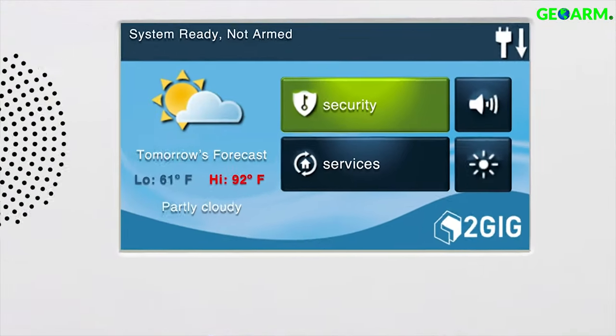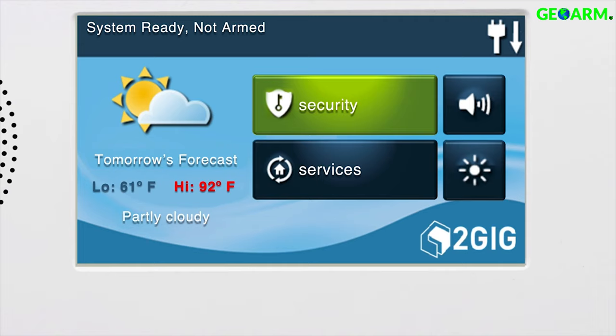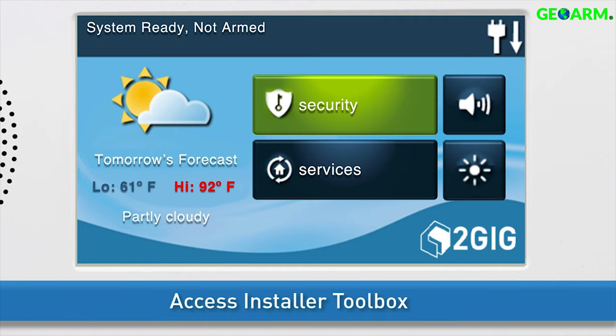To program a door window contact into a security zone, you will first need to access the Installer Toolbox.